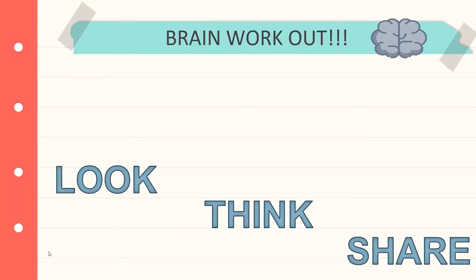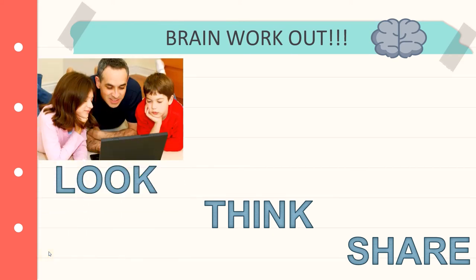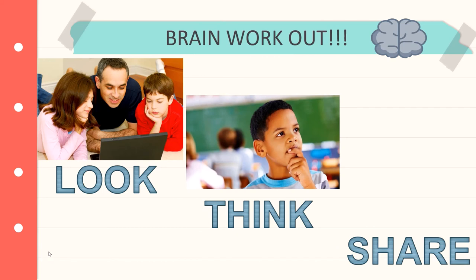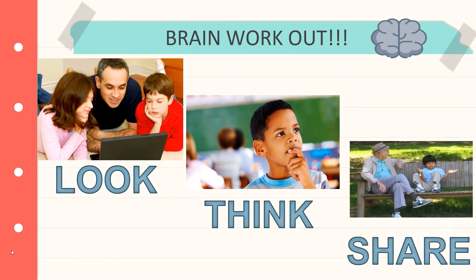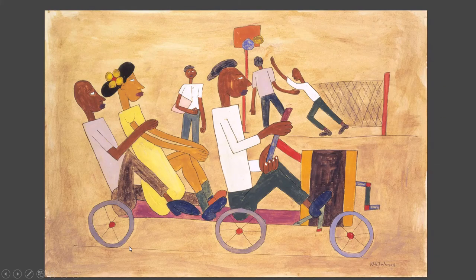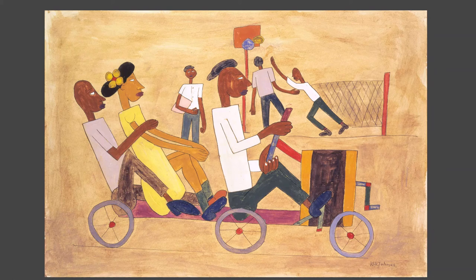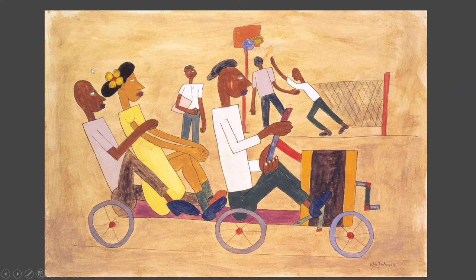All right. Are you ready for a brain workout? Here's what we're going to do. I'm going to show you a picture. And first, I want you to just carefully look all around the picture. I'm going to give you some quiet time just to think about what you see. Last, I'm going to ask you some questions. And I'm going to ask you to share your thinking with someone else. You could be a grown up, a friend, or even a stuffed animal. If you don't have anyone to share your thinking with, pause the video, go find someone, come back with them, and then press play.